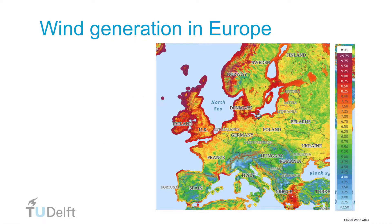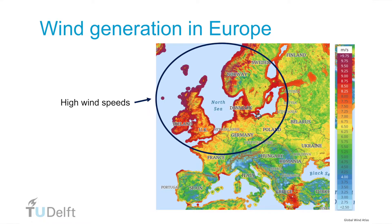Let's start with wind energy. For wind turbines to operate efficiently we need wind, so it makes sense to locate wind turbines in the areas with the most wind available. For Europe, these are indicated by the dark red areas on this map, plotting wind speeds up to 10 meters per second. The most suitable areas are in the coastal regions of Europe, especially the North Sea and the ocean in the northwest.